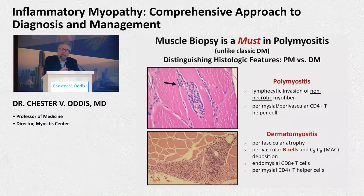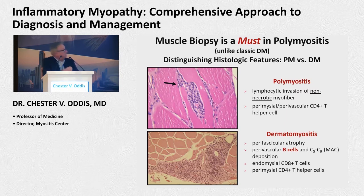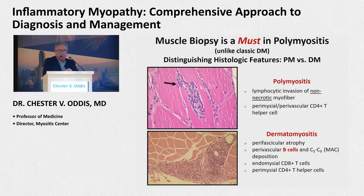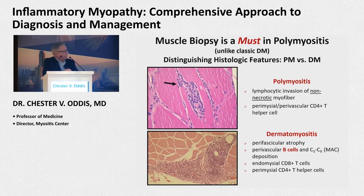Earlier in my career we used to say: you have polymyositis, you slap a rash on top of it, that's dermatomyositis. Well, that's not the case — these are essentially two different diseases, and you can see that when you look at the histology. Polymyositis shows lymphocytic invasion of a non-necrotic myofiber, often CD4-positive T cells and T helper cells. Dermatomyositis looks different — sometimes like vasculitis, with perifascicular atrophy, intense inflammatory infiltrate, sometimes B cells and complement deposition.